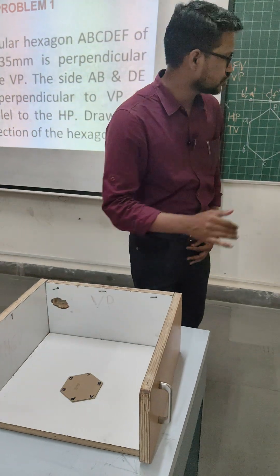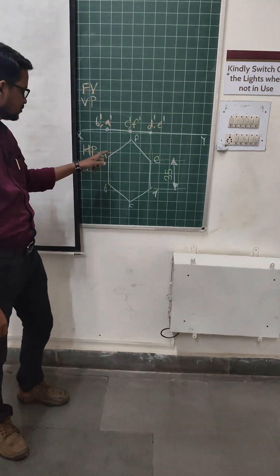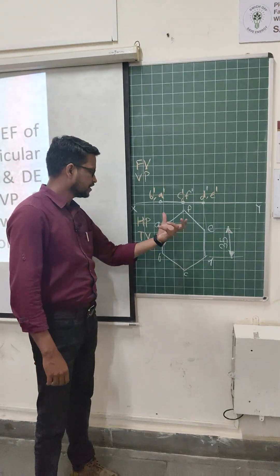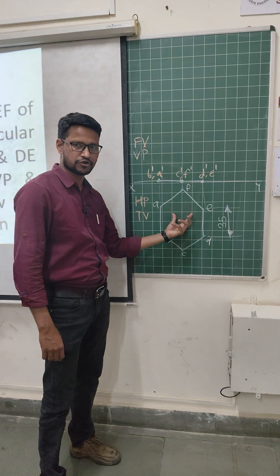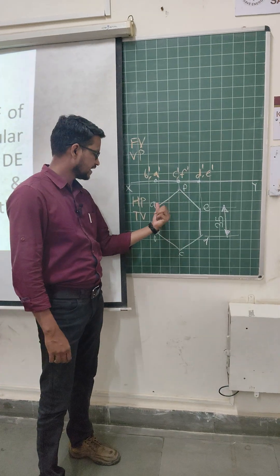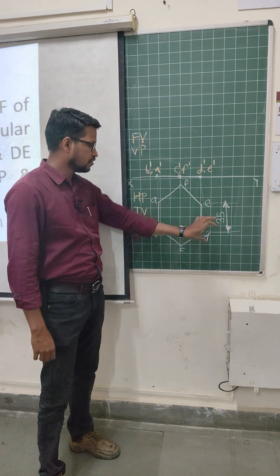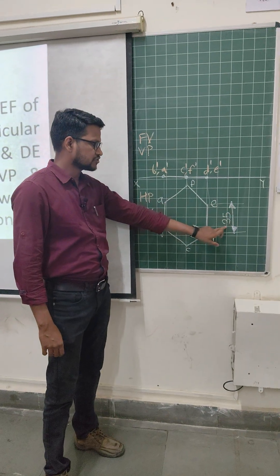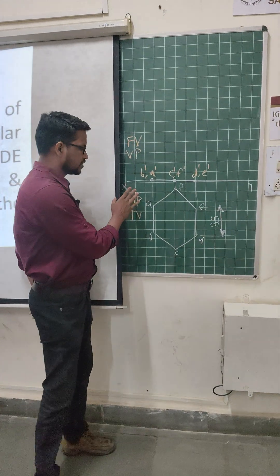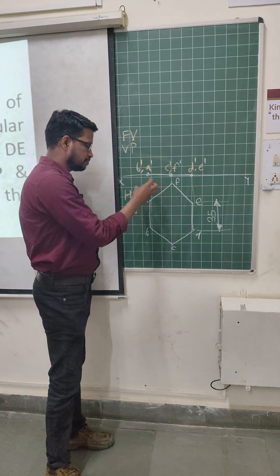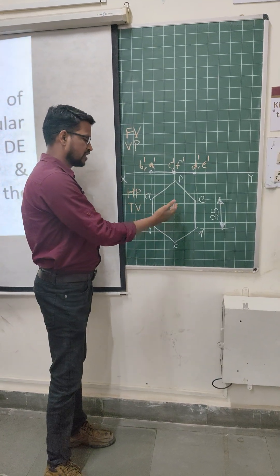Now, for the actual position of this component when you draw the solution: when you are looking from the top side, the true shape appears as a hexagon for this component — A, B, C, D, E, F. The dimension of this hexagon is 35 mm. The entire top view occurs on the HP.